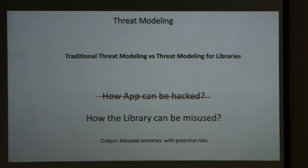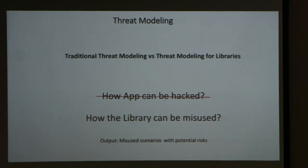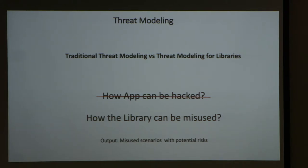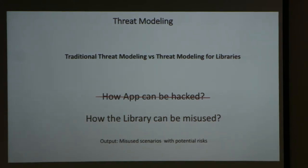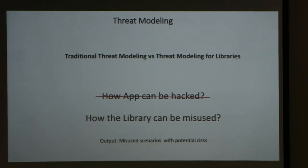In a typical threat modeling scenario for applications, we try to come up with scenarios where an attacker can hack in. But for libraries it's really not about hacking — when it comes to libraries, you need to think about how a developer can misuse the library. As a result of the threat modeling activity, you list those misuse scenarios and identify the correct controls to avoid them. This could be just an hour-long activity, and once you have the list of implicit and explicit security controls, it becomes really easy.